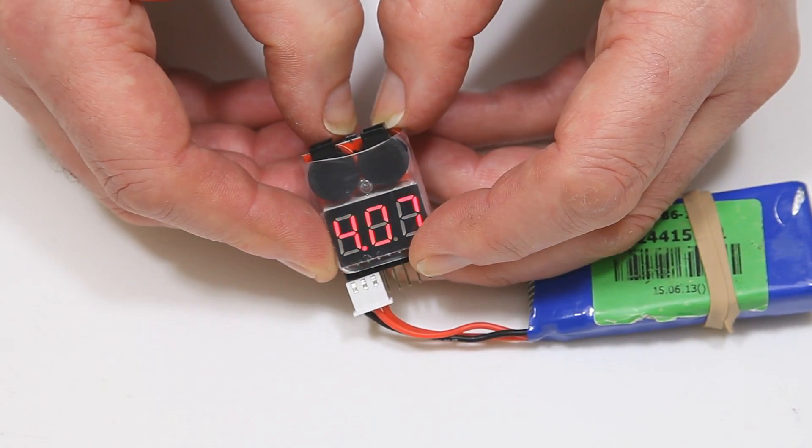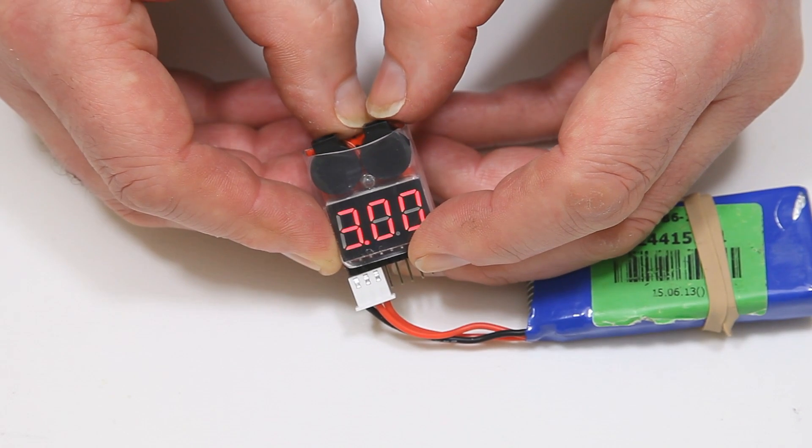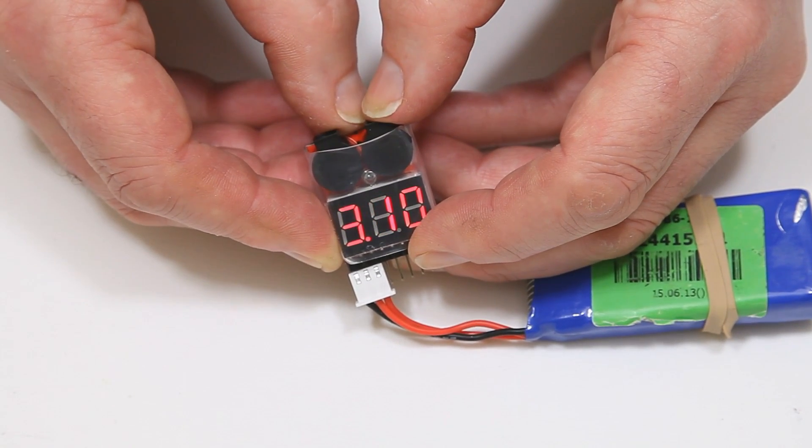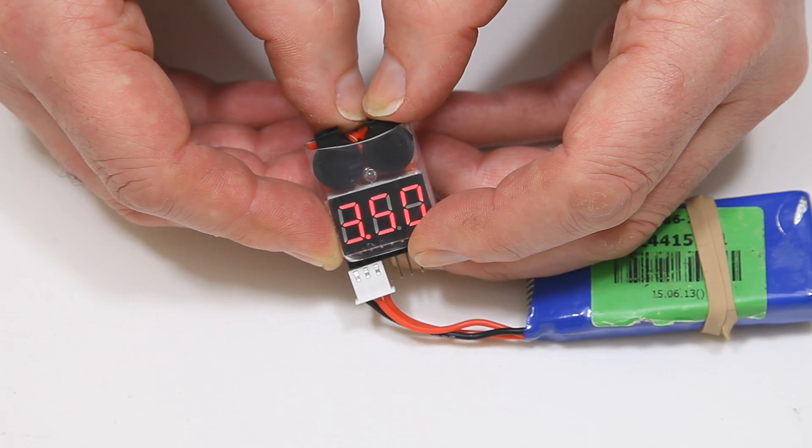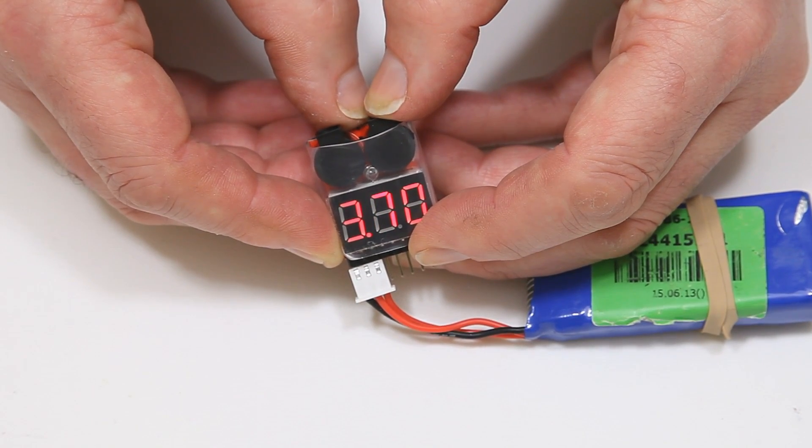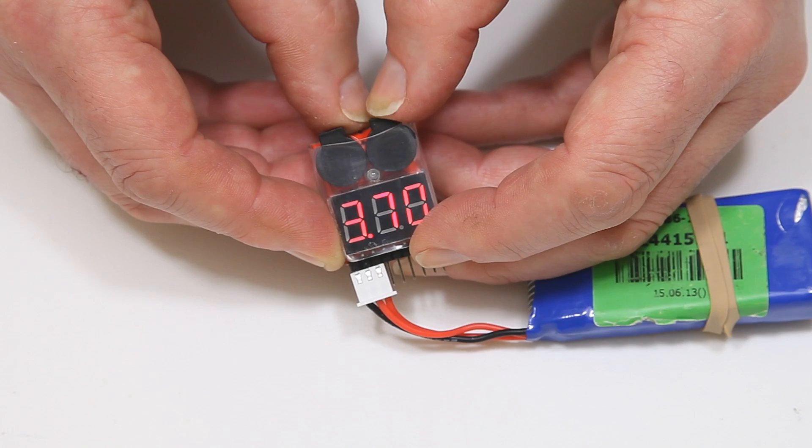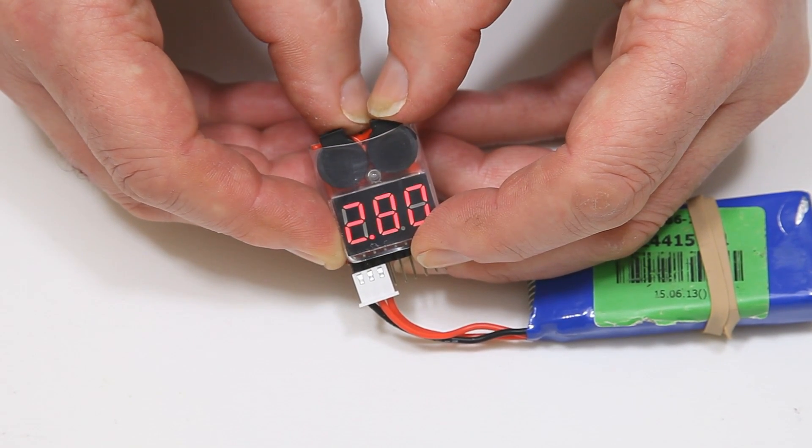If I press the button it will scroll through a menu of when you want the buzzer to sound, so it goes all the way around, so off 2.7 is where it starts, 2.8, 2.9, 3, 3.1 or 3.2.